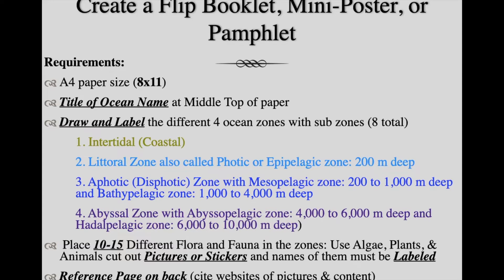On the top you're going to write the ocean name and then draw the four main ocean zones with the sub-zones. There should be a total of eight zones — the four main zones include intertidal or coastal, literal zone or photic or epipelagic. Number three is aphotic, which is divided into the mesopelagic and bathopelagic. Number four, the abyssal, is divided into abysopelagic and hadopelagic.